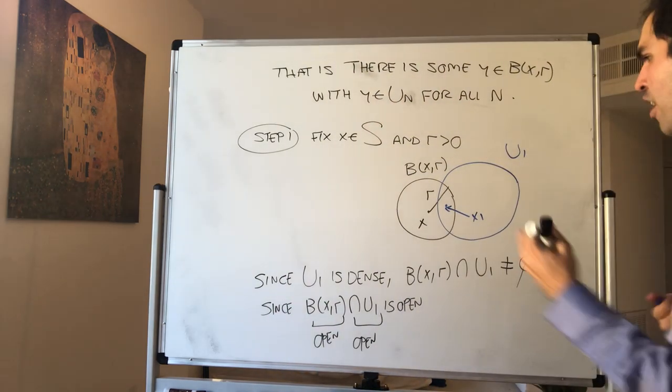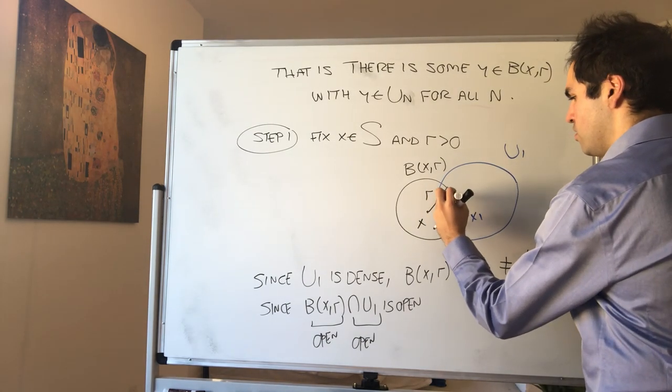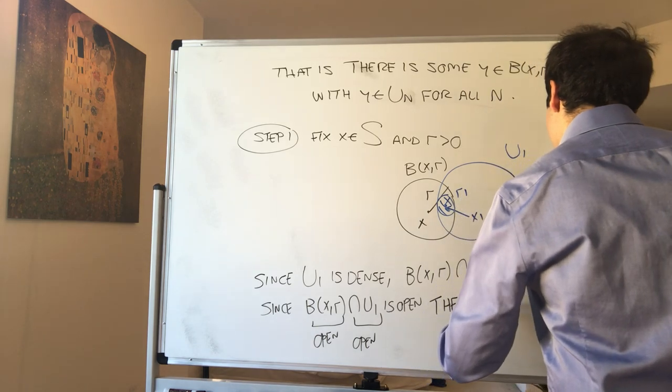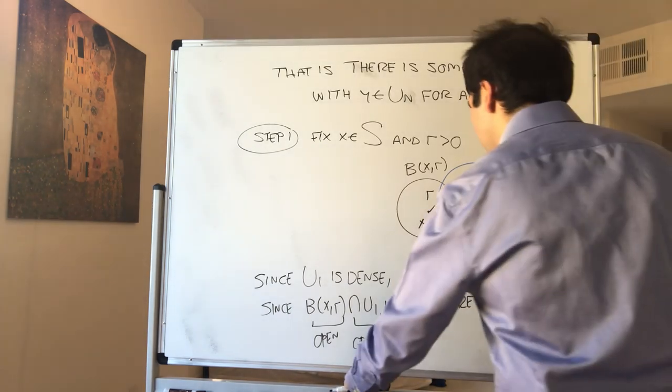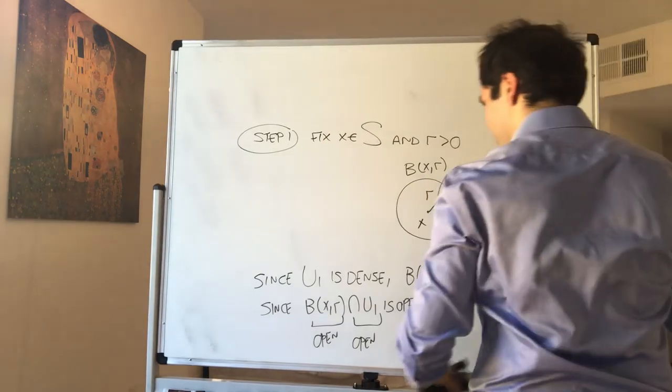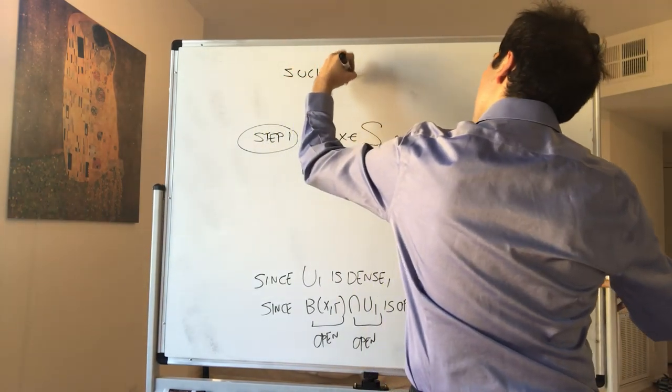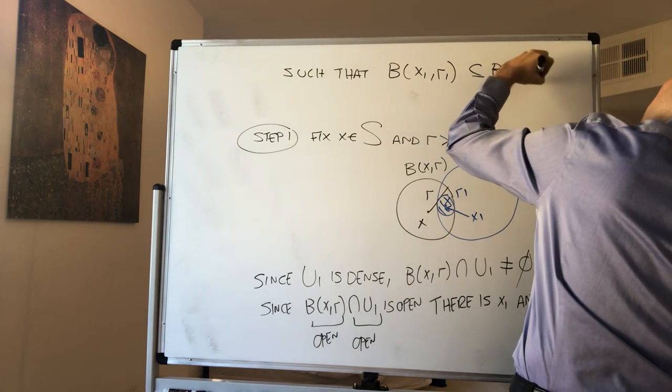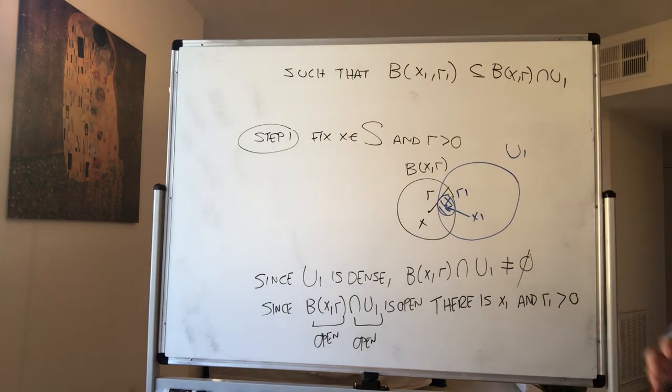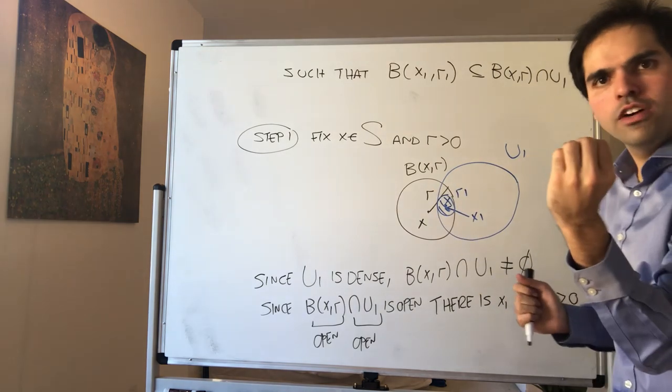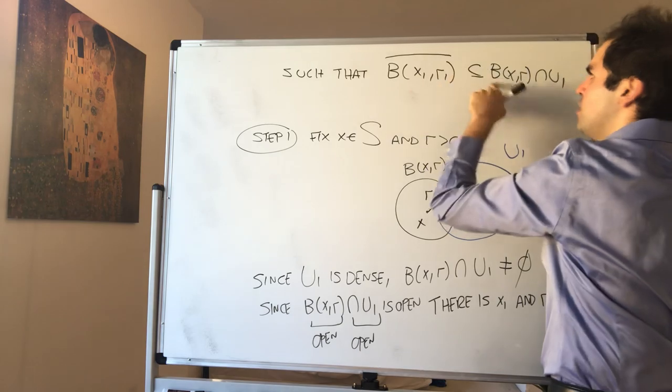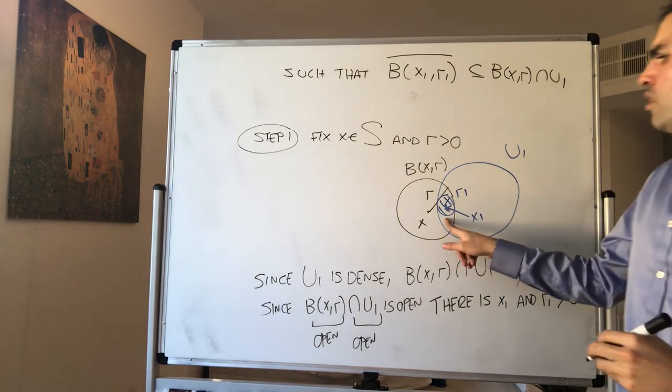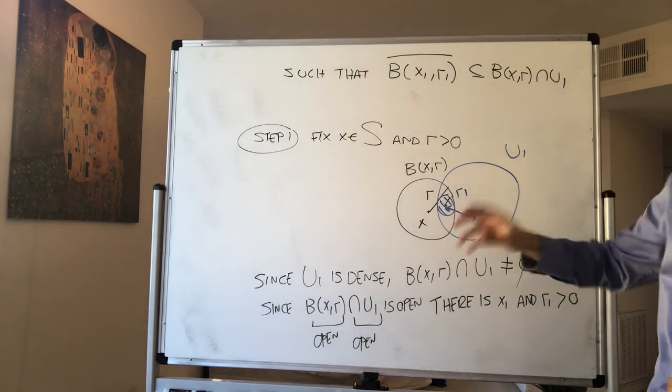What we know is actually we can fit in a very small ball in the intersection of radius r1. So there is x1 and r1 positive such that the ball centered at x1 and radius r1 is included in that intersection. However, we can say more than that, because if we make the radius small enough, we can even say that the closure of the ball is included in the intersection. Just make the ball very tiny to actually also have the boundary be in that intersection. And not only that, without loss of generality we can also assume r1 is less than 1.